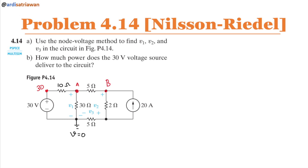Assuming the direction of the current: this one goes to the right, this one going down, this going to the right, and this going down. I need one more node here — this is node C. Now let's do KCL at node A.